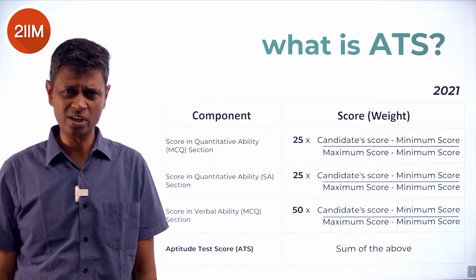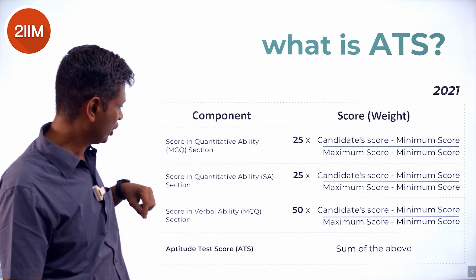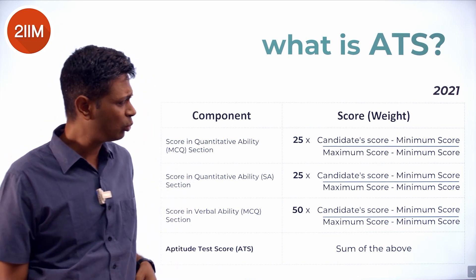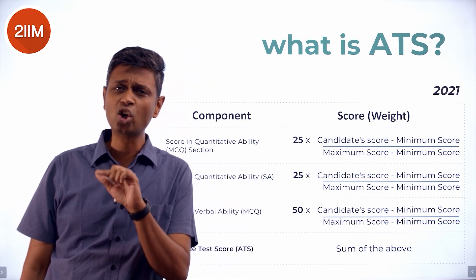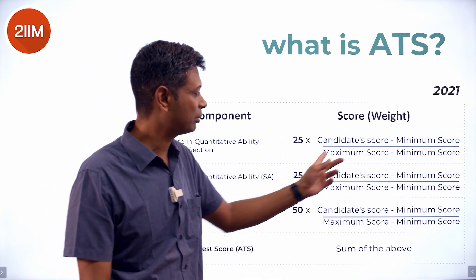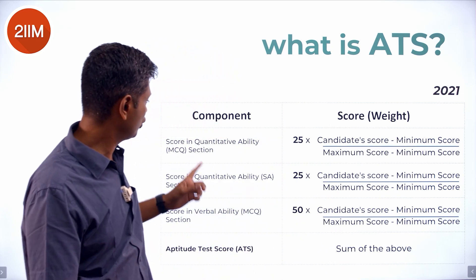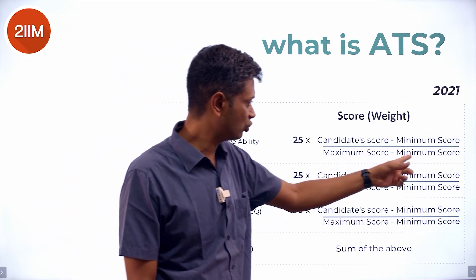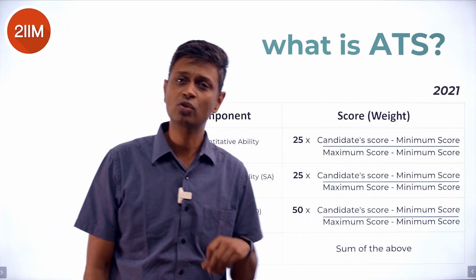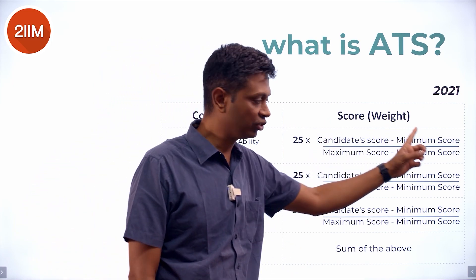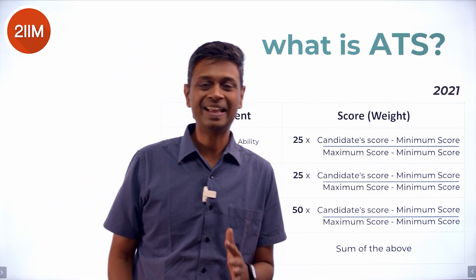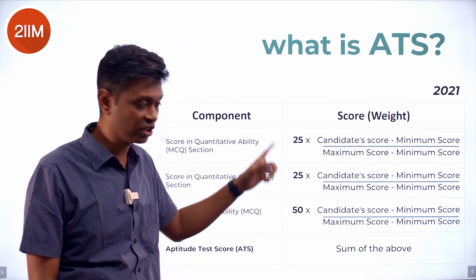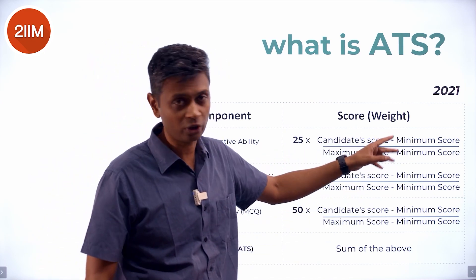What is ATS? What they do is take your scores in the MCQ section, the short answer section, and your verbal ability section. Then they say: I don't want to just see your score — I want to see your score in the context of the maximum and minimum. So the maximum score in the MCQ quant section, let's say 72, and the minimum is 0. Then your score, say 36, gives a fraction: (36 − 0) / (72 − 0). That fraction, multiplied by the section weightage, is your ATS contribution. The fraction will always be less than or equal to 1.